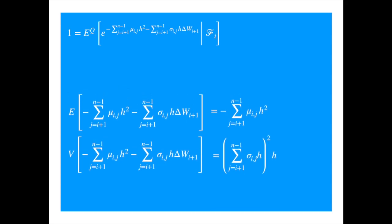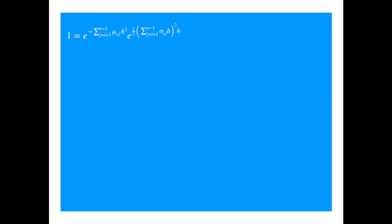We know from the geometric Brownian motion video that the expected value of the exponential of a normal is equal to the exponential of the mean plus half the variance. So if we make the substitutions, we get. Now everything is deterministic. For the exponential to equal one, the exponent must be equal to zero, and we can shift the h term to the right hand side.